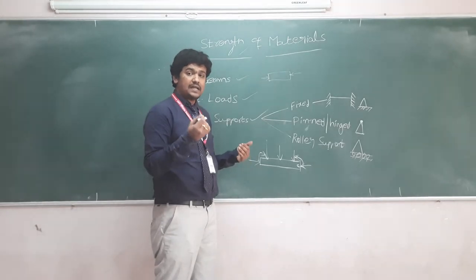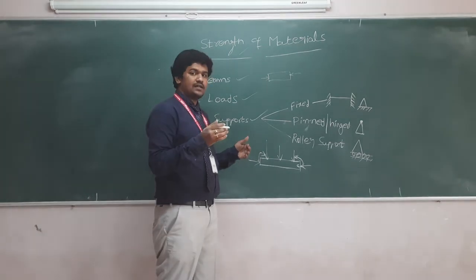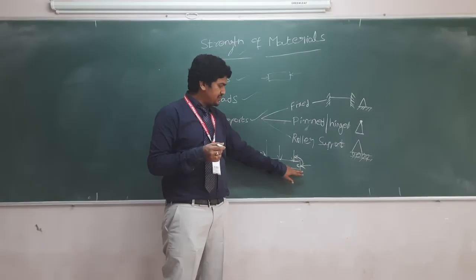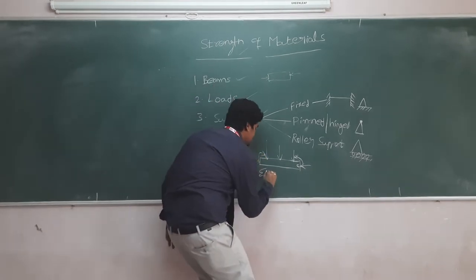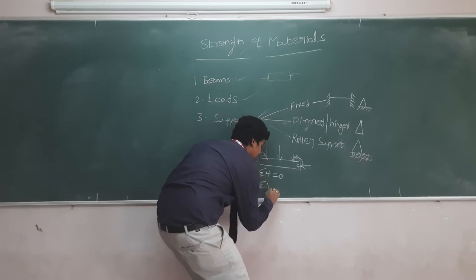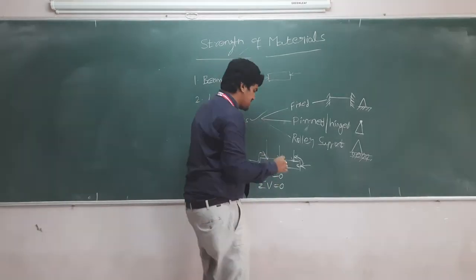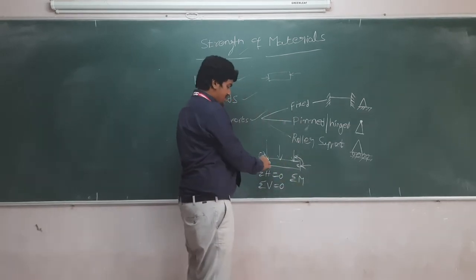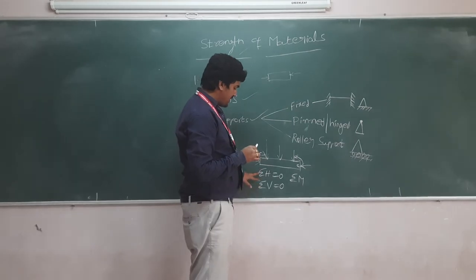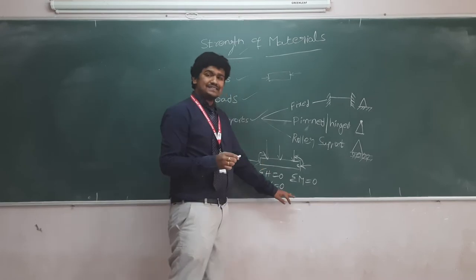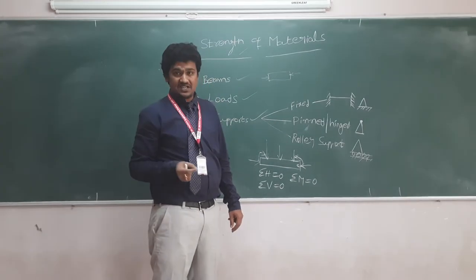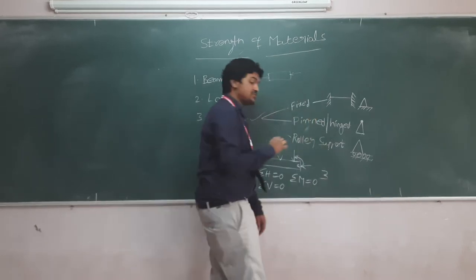For any type of support in structural engineering, equilibrium equations are very important. The sum of horizontal forces — sigma H equals zero. The sum of vertical forces — sigma V equals zero. And the sum of moments — sigma M equals zero. These three equations are termed as equilibrium equations. The number of equilibrium equations is always three.